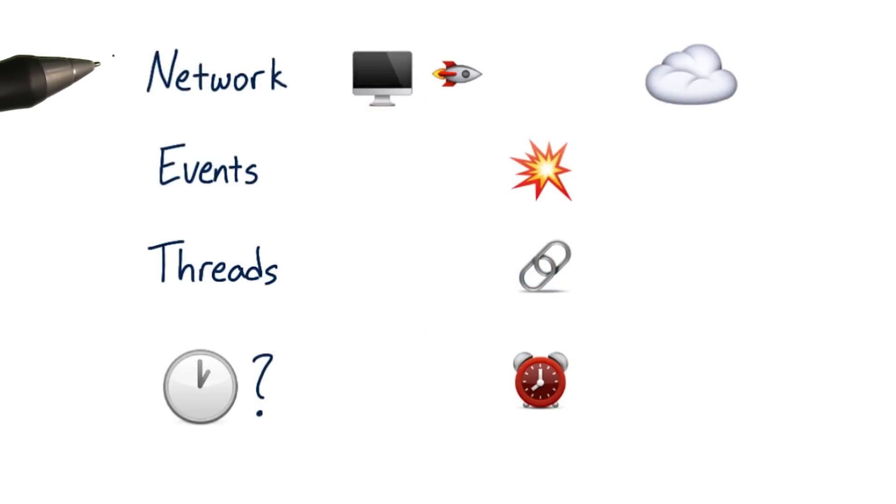Network requests aren't the only examples of asynchronous code. Any code that relies on processes like these, like events, like threads, or just some kind of unknowable finishing time, are asynchronous.